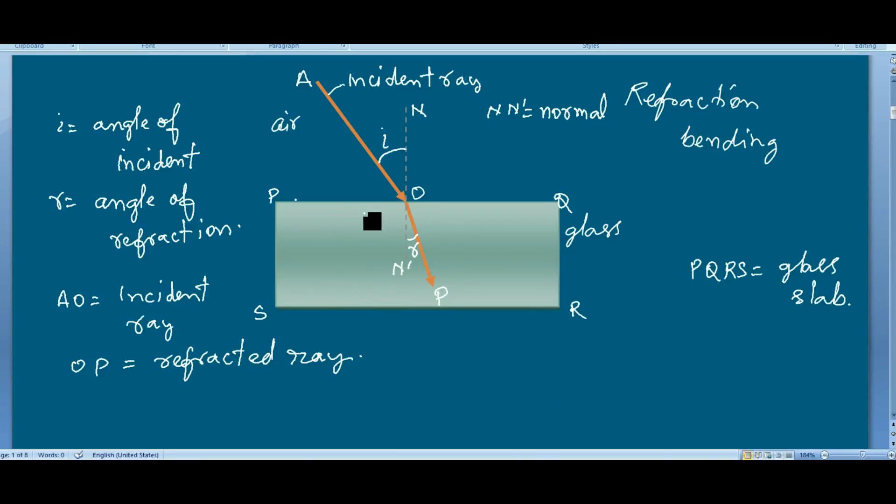Here the angle which the incident ray AO makes with the normal is called the angle of incidence, and this one is the refracted ray. What you notice at the PQ surface, which is the juncture of air and glass, is that the ray of light bends toward the normal. That means in this case the angle of refraction R will be less than the angle of incidence.